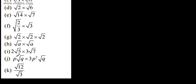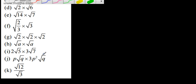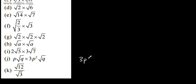Let's look at this one: we've got p root q multiplied by 3p squared root q. Let's deal with the p and the 3p squared: p multiplied by p squared is p cubed, so we have 3p cubed. Now, root q multiplied by root q gives us q. So we can write it as 3p cubed q.